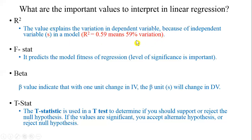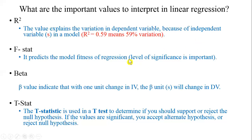The second value is F-statistics. These are also values you get in your regression analysis — they predict the model fitness of regression and we are really interested in the level of significance. If the F-statistics value is significant we say the model is fit for regression. If the F-stat significance value is less than 0.05 then we call it a significant value.